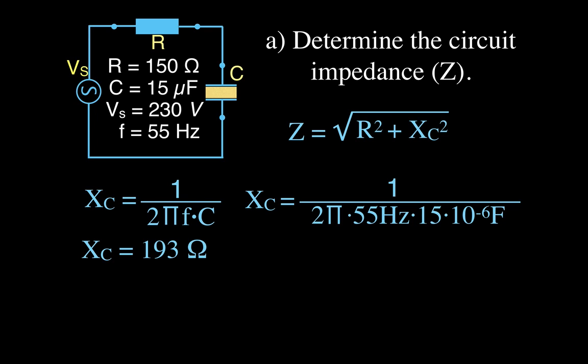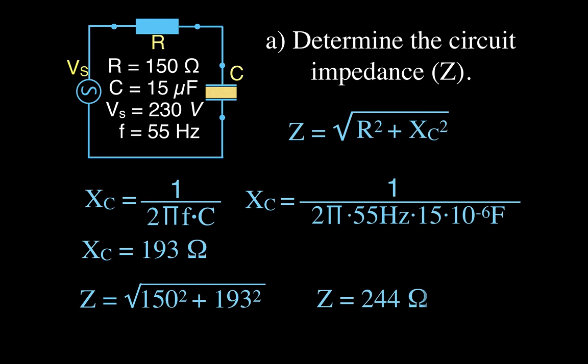The capacitive reactance is 193 ohms. Now we know R and XC, so we take Z equals the square root of 150 squared plus 193 squared, and we get that the impedance of that circuit is 244 ohms. That completes part A, the impedance.